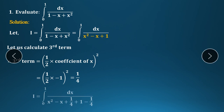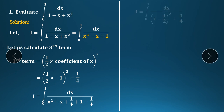So the third term we get is 1/4. Now this third term must be added and subtracted in the denominator of the integrand. So we get: x² − x + 1/4 + 1 − 1/4 in the denominator. So i is equal to integration from 0 to 1 of dx upon (x − 1/2)² — expanding this bracket gives x² − x + 1/4.